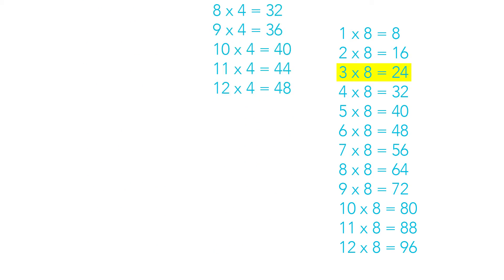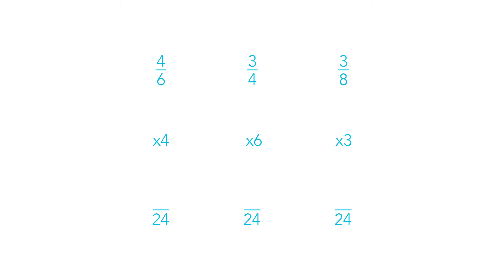So now we need to look at our fractions again and multiply the denominators to make them all equal to 24. Just one more step now. An important thing to remember with fractions is that we always do the same to the top as we do to the bottom. So I need to multiply the numerator by the same number that I multiplied the denominator by.